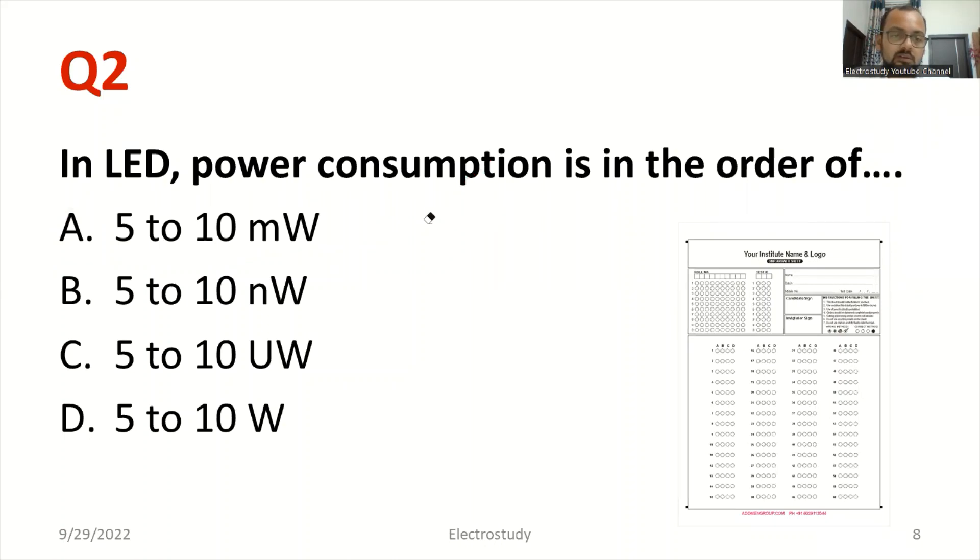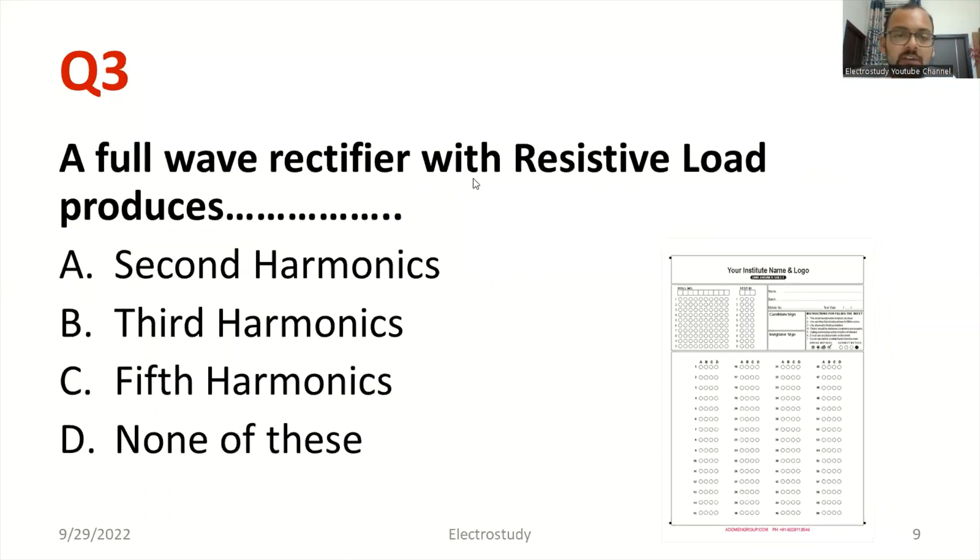Now moving on to the further question. Full-wave rectifier with resistive load produces. You need to know what is harmonics. Suppose the output waveform which is not exactly the sinusoidal shape, that is because of harmonics. There are different reasons for the harmonics that we'll discuss afterwards. Can you identify the answer? To be frank, A, B, C all are wrong. There won't be any harmonics in case of full-wave rectifier with the resistive load. Obviously, which is the right answer? Yes. The right answer is option D, none of these.